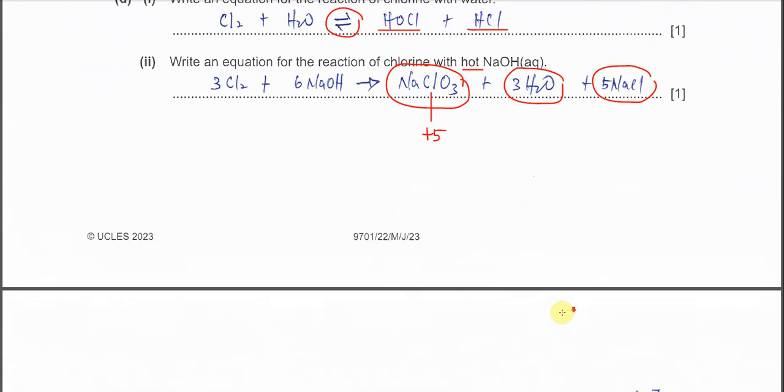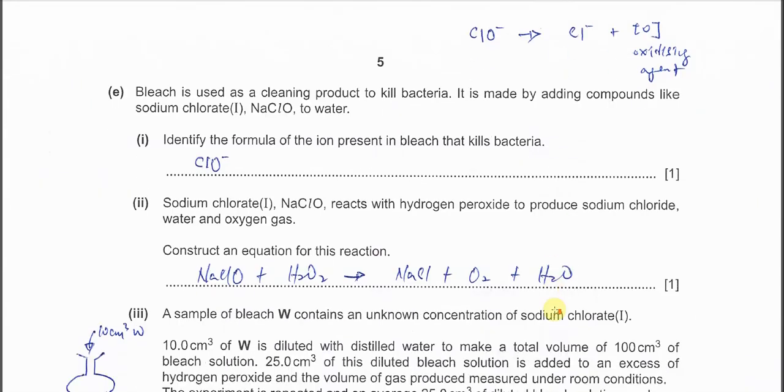It also forms the salt NaCl and H2O. As long as balanced equation with correct products, you get one mark. Part E: bleach is used as a cleaning product to kill bacteria. Identify the formula of the ion present in bleach that kills bacteria. It's the chlorate ion, ClO-. Since it asks for formula of ion, you don't need to put sodium chlorate, just put the chlorate ion ClO-. ClO- will produce oxidizing agent, so these ions dissociate and form chloride. The oxygen acts as the oxidizing agent to oxidize the bacteria membrane, so you can kill the bacteria.